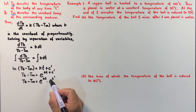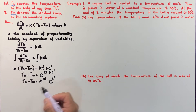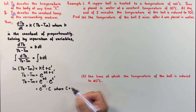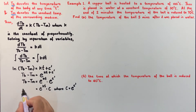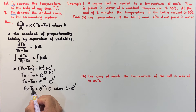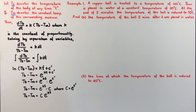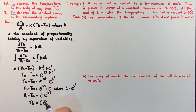When Euler's constant e is raised to another constant, the result is still a constant. So this becomes e to the power KT times some constant C, where C equals e to the power C prime. This equals T sub B minus T sub M, giving us C times e to the power KT equals T sub B minus T sub M. Adding T sub M to both sides, T sub B equals C times e to the power KT plus T sub M.